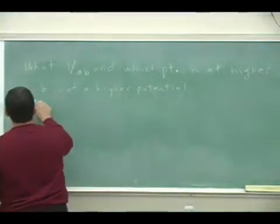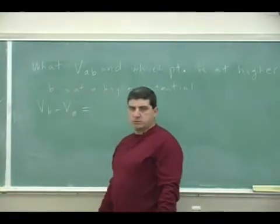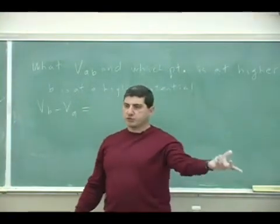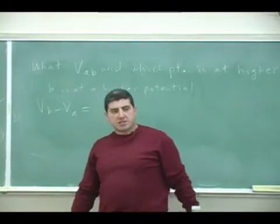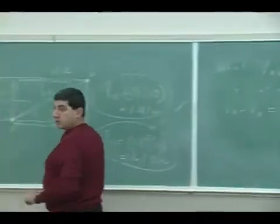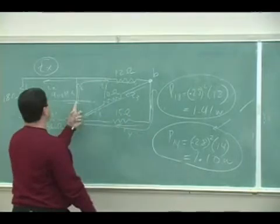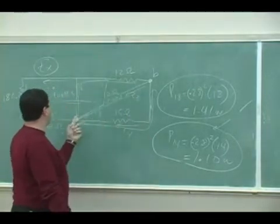So VB minus VA is going to equal the potential difference between point B and point A. Well, let's see. I'm going to show you it doesn't matter what route we take. If we go this route, up the battery, and this one, what happens?